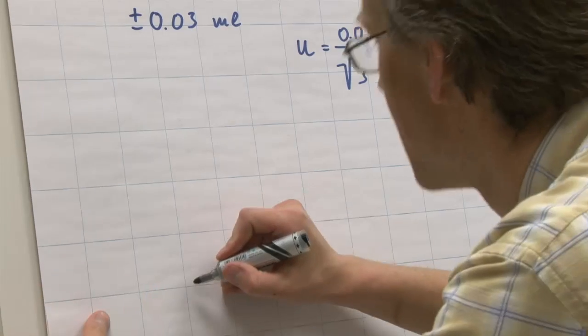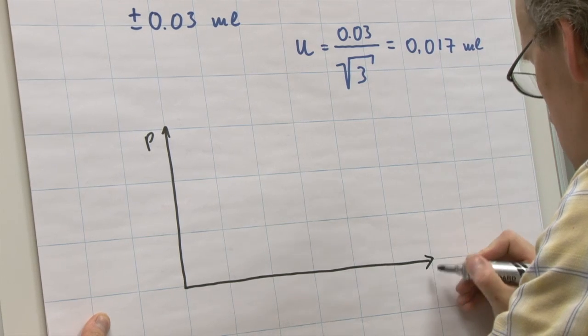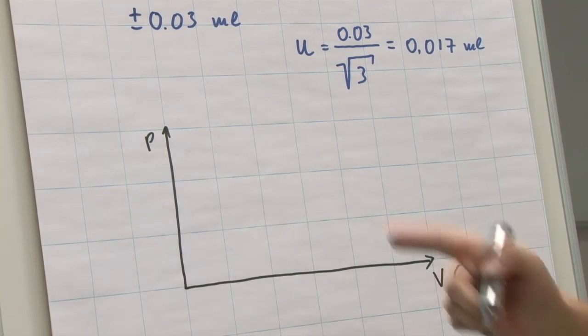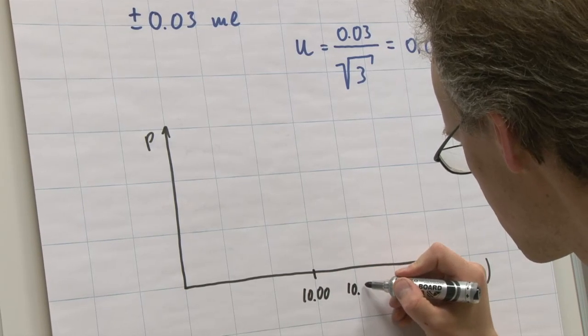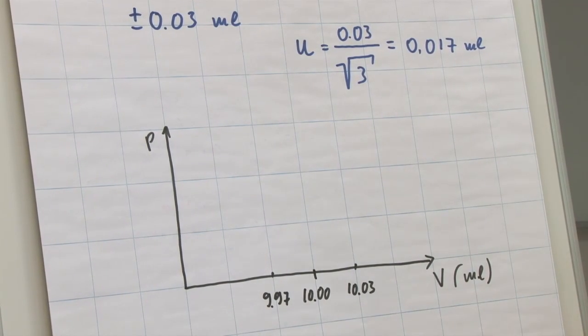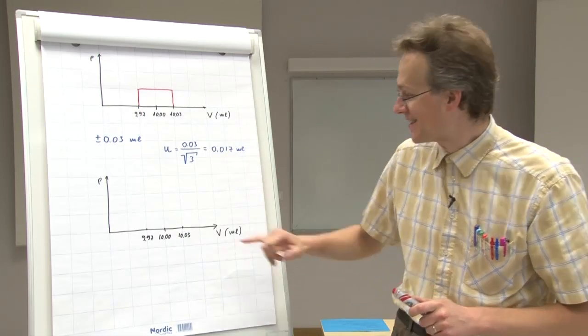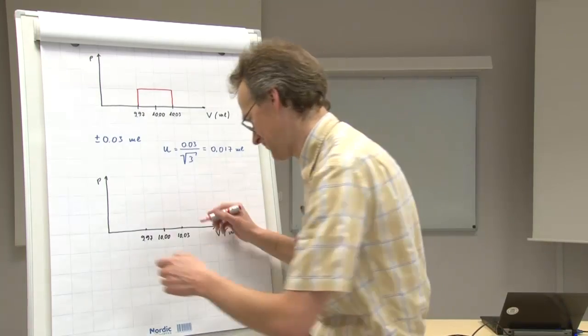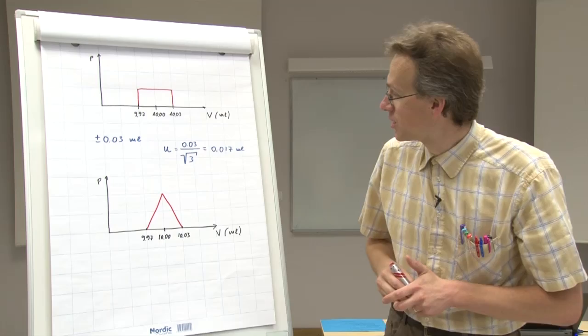Let us now look at the triangular distribution. It's quite similar to the rectangular distribution, but with difference in shape. Again, we have here probability, we have volume. But now, this time, the probability of the true calibrated volume being near 10 is higher than being near 10.03 or 9.97. And the shape of the distribution curve looks like a triangle.